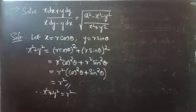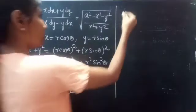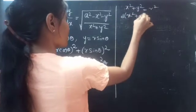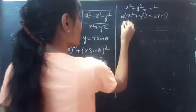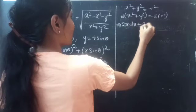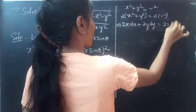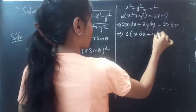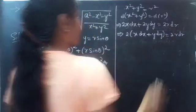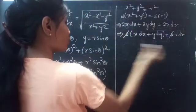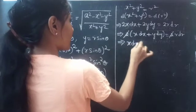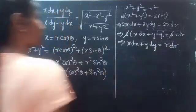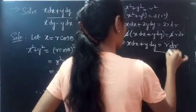If we differentiate both sides of x² + y² = r², we get 2x dx + 2y dy = 2r dr. Cancelling 2 from both sides, we finally get x dx + y dy = r dr. Consider this as equation 1.